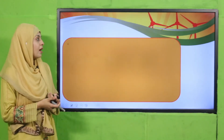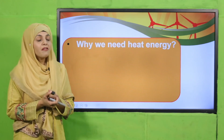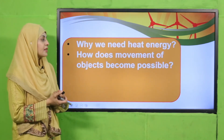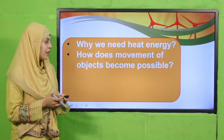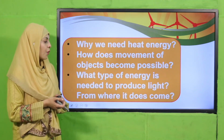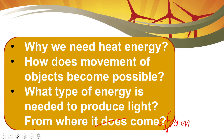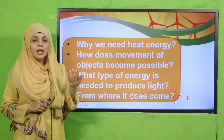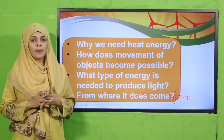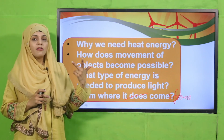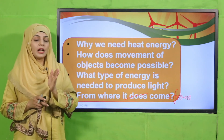Now is the time for evaluation. Quickly answer these questions: Why do we need heat energy? Jaldi se mujhe batayin kis kis kaam ke liye aapko heat energy ki zarurat hoti hai. Very good. How does movement of objects become possible? Kaunsi energies se objects move karte hain? Very good. What type of energy is needed to produce light, and from where does it come? Light ki main source sun hai, lekin gharon mein light produce karne ke liye electricity, solar, wind, fossil fuels, and natural gas are used.